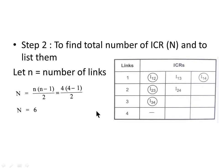Now let us list down those 6 ICRs: I12, I13, I14, I23, I24, and I34. Out of these, I12, I23, I34, and I14 are fixed and permanent ICRs which can be located by observation. While I13 and I24 are called moving ICRs, which have to be located by using Kennedy's theorem.